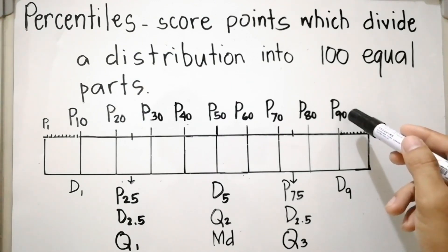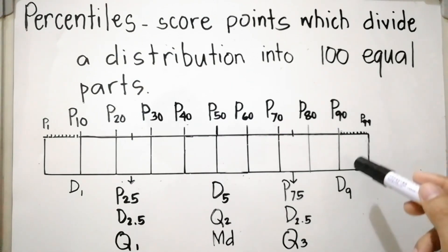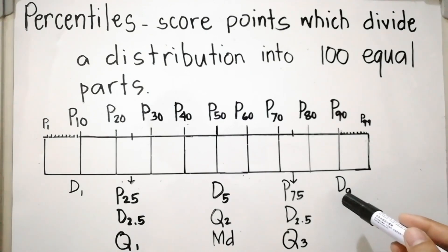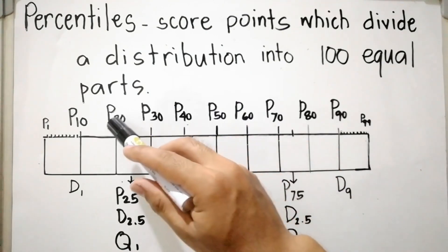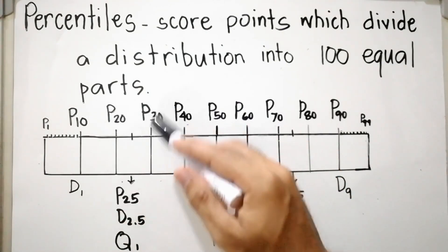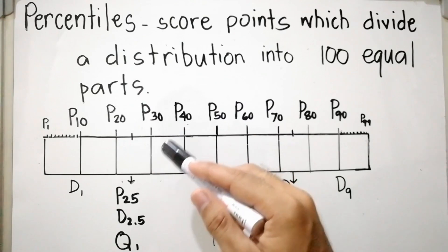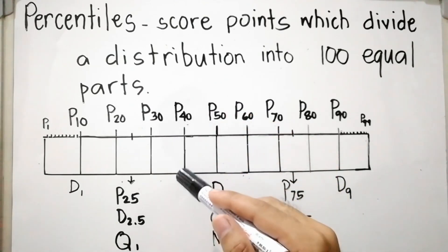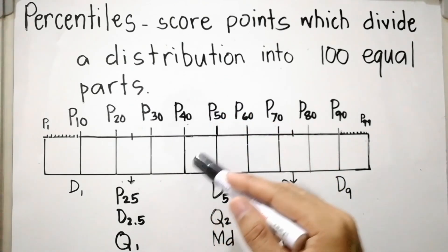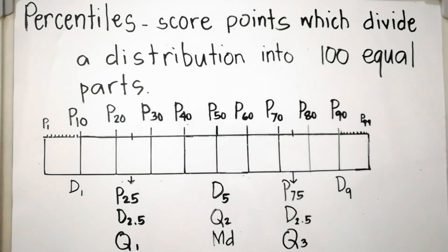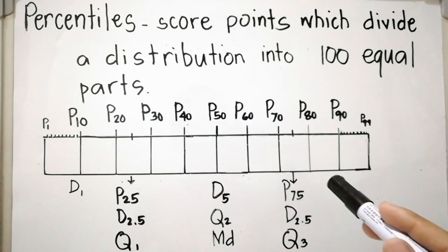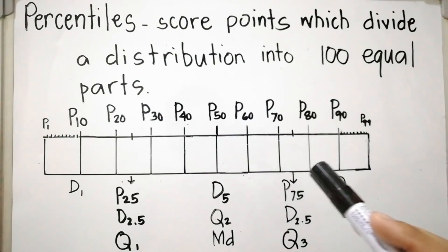For P sub 90, this is equivalent to D sub 9. Similarly, P sub 30 is equivalent to D sub 3, P sub 40 to D sub 4, P sub 50 to D sub 5, and so on and so forth. Those are the equivalent score points to quartiles and deciles.